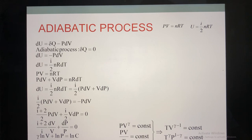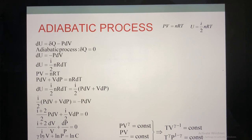You divide both sides of the equation by PV. So you have a new equation. Now you do the integration: here you have the natural log of V, and here you have the natural log of P, and here is a constant. Rewriting this result gives PV to the power of gamma equals constant. This is the equation of the adiabatic process.